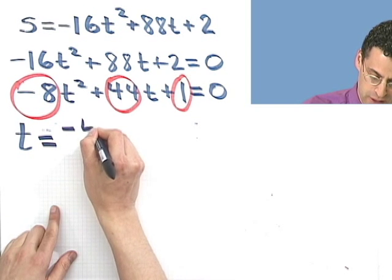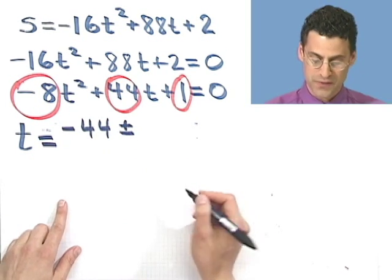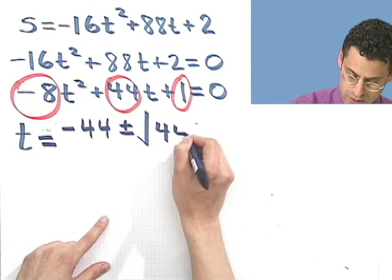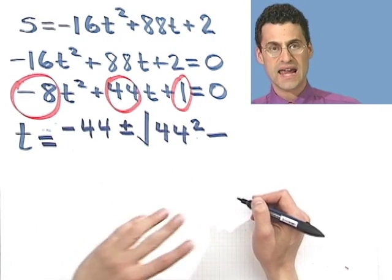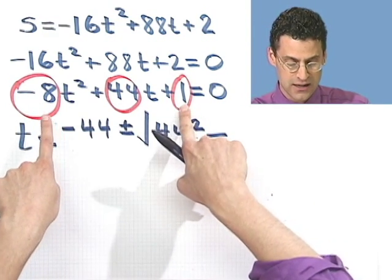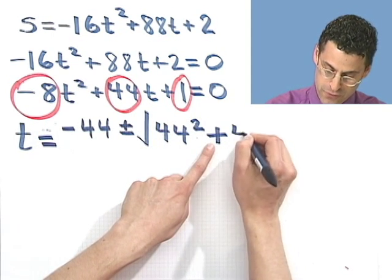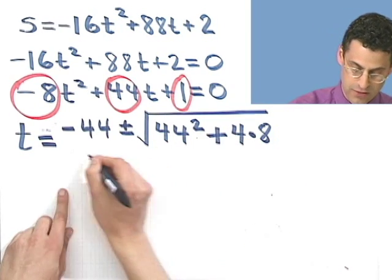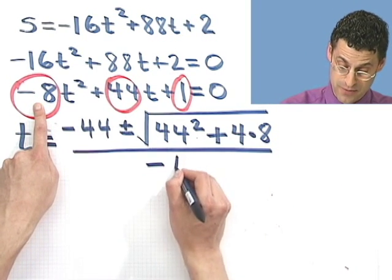Negative b, so that's going to be minus 44, plus or minus the square root of b squared, which is 44 squared, minus 4ac. So that's 4 times a times c. Well, that gives me a negative 8, and I'm subtracting, so I have a plus 4 times 8. So that's all into the square root, all divided by 2a, and 2a is going to be negative 16 in this problem.